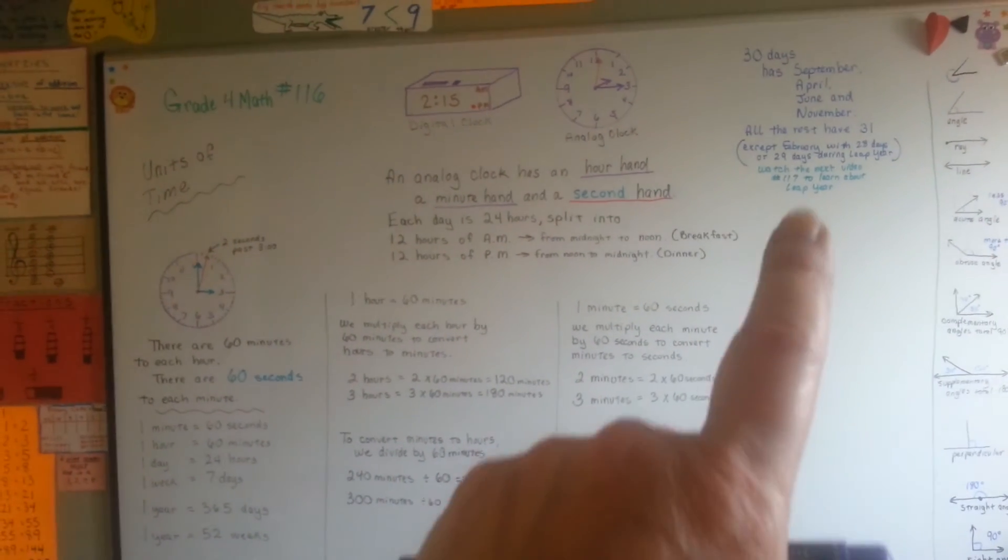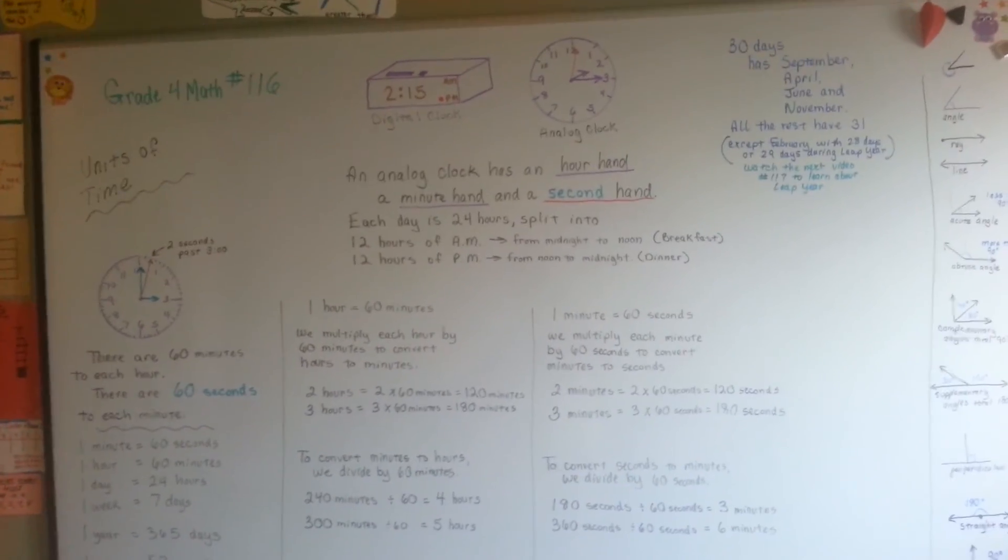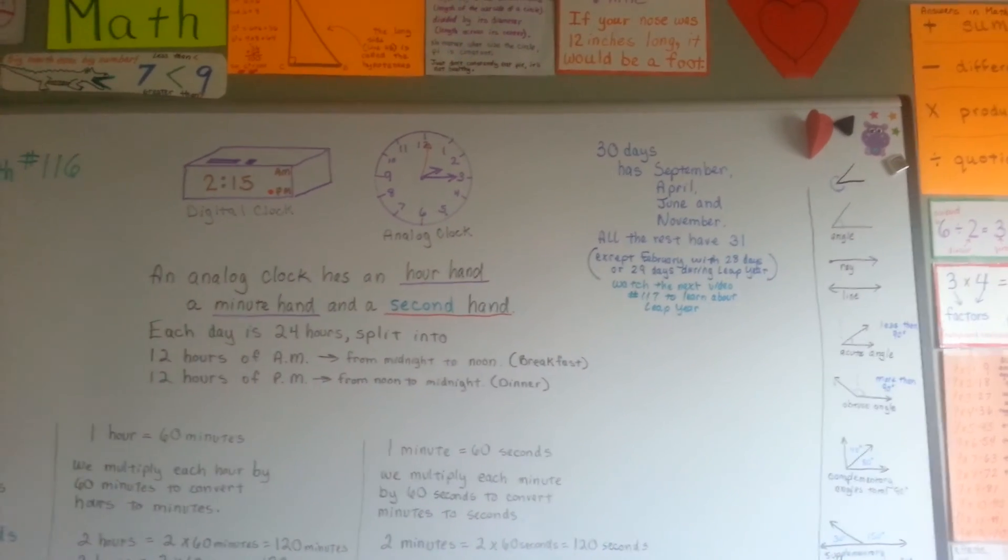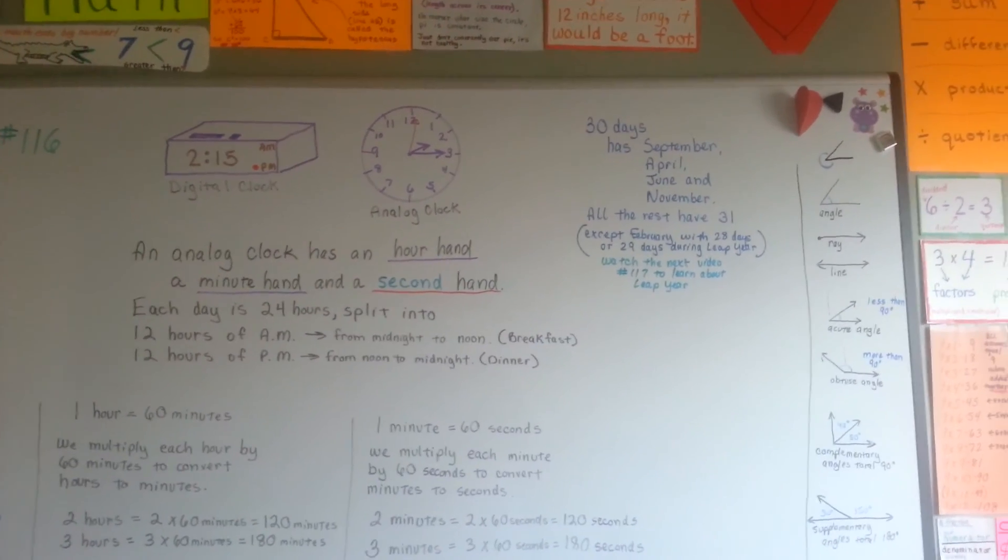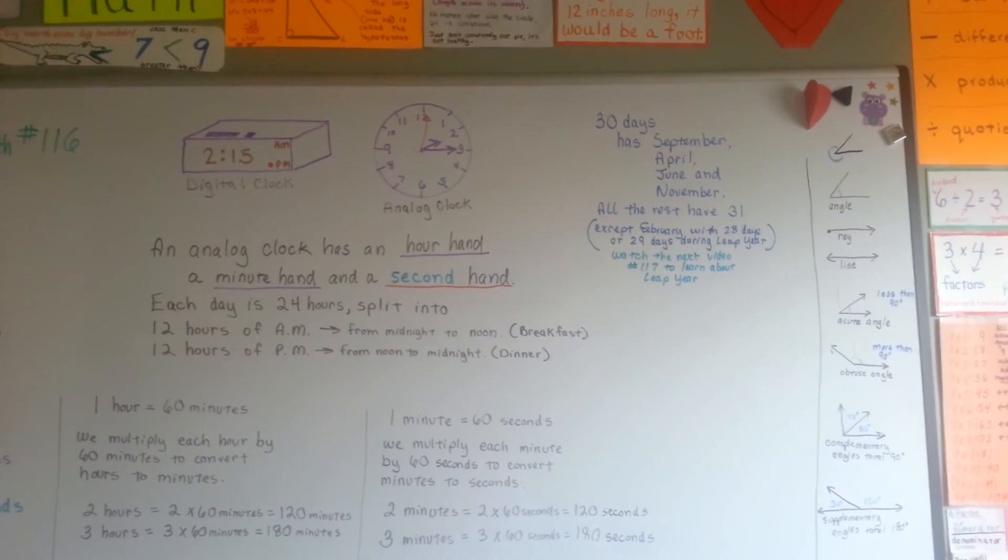So if you want to remember a cute little poem, we're going to talk about this more in the next video. 30 days has September, April, June, and November. All the rest have 31, except February with 28 days, or 29 days during leap year.